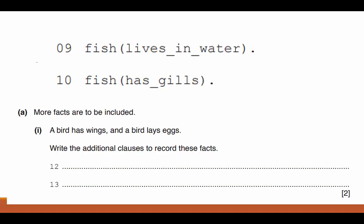So it says, more facts are to be included. These are facts right here. A bird has wings. A bird lays eggs. Those are facts, and we need to put them inside our declarative programming language. There's some rules for that. You can't have spaces. You've got to have periods. Those are stop commands. You've got to have those, and forgetting those can cost you an easy point. So a bird has wings, and a bird lays eggs. Write the additional clauses to record these facts.